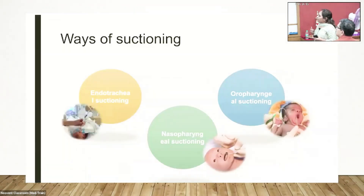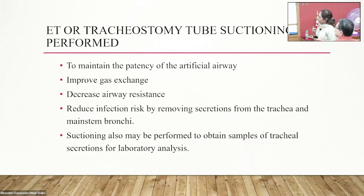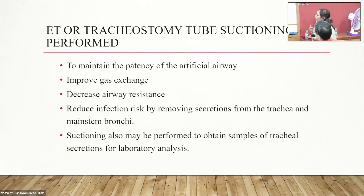There are many ways of suctioning. We suction the endotracheal tube, nasopharynx, and oropharynx. Endotracheal or tracheostomy tube suction is performed to maintain patency of the artificial airway, improve gas exchange, decrease airway resistance, and reduce infection risk by removing secretion from the trachea and mainstream bronchi.